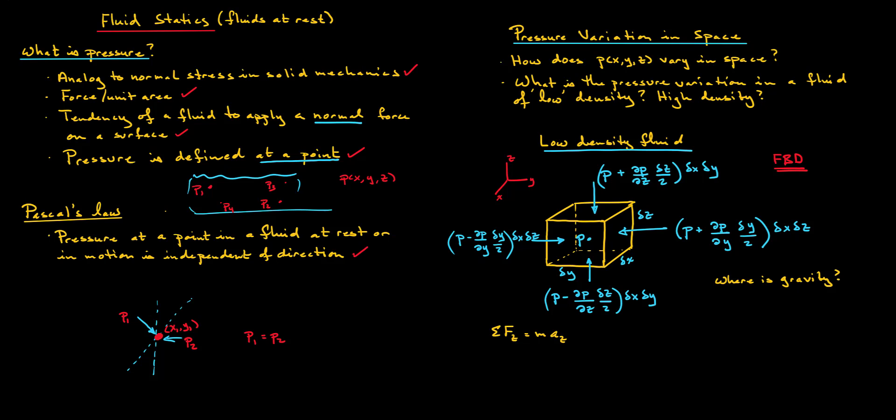Next we seek to answer some questions about the pressure variation in space — and again, this is the pressure variation in space of a fluid that is at rest. In particular, we seek to answer two questions: what is the pressure variation in a fluid which has low density, and conversely, what is the pressure variation in a fluid of high density?